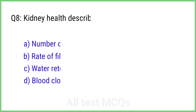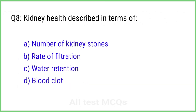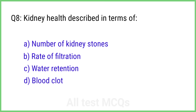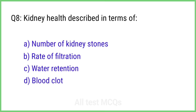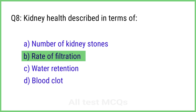Question 8. Kidney health is described in terms of? The right answer is option B: Rate of filtration.